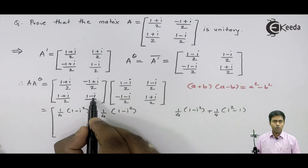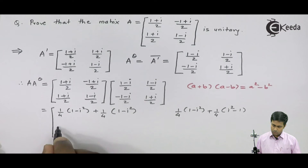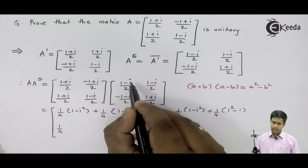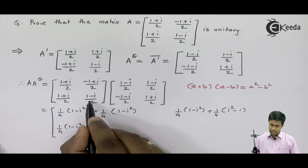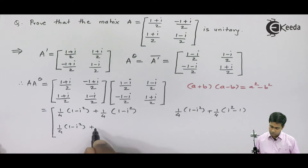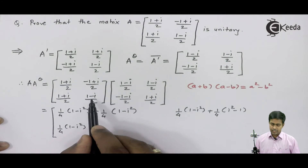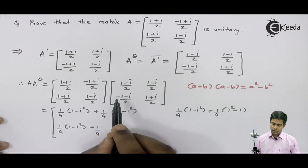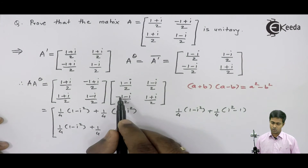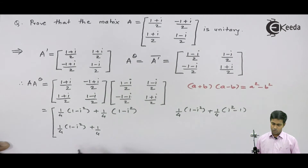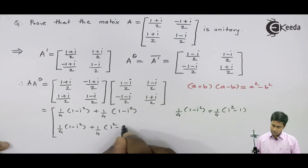Next, second row with the first column. We get 1/4 and (1+i)(1-i) giving 1 - i². Then 1/4, and here considering (-i) as a and 1 as b: since one term has +1 and the other has -1, it is a+b and a-b. Applying the formula, we get a² which is (-i)² = i², minus 1² = 1, giving i² - 1.